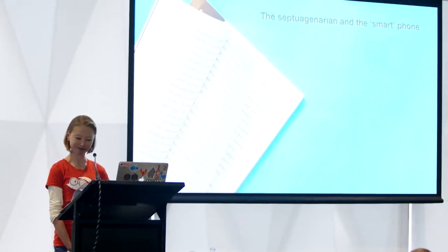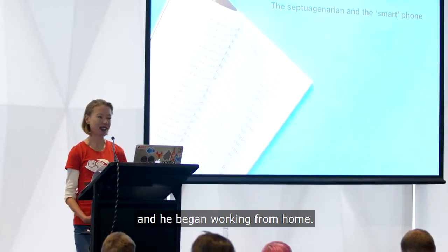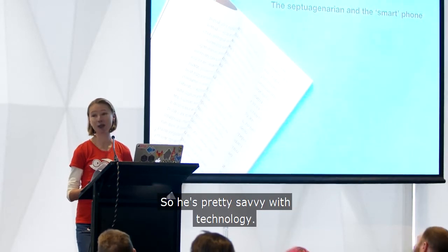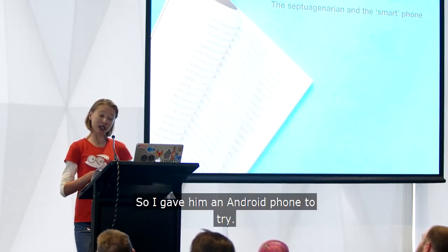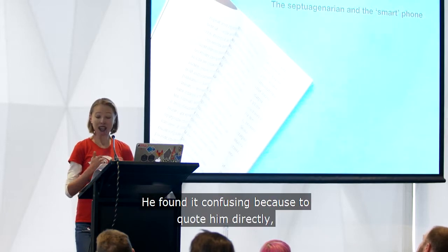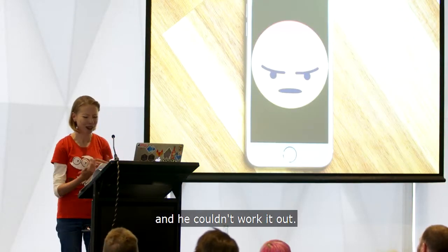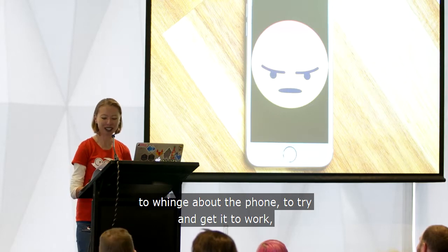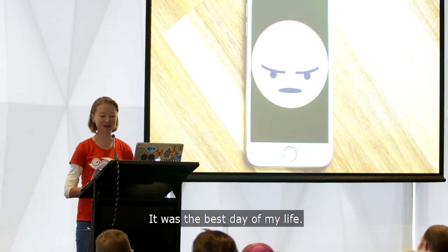The septuagenarian and the smartphone. So my dad, he's in his early 70s, and last year he closed his shop and he began working from home. I thought it was a really good idea to get him a smartphone. He's pretty savvy with technology — he used computers all the time at work, I didn't think it would be an issue. So I gave him an Android phone to try. He found it confusing because, to quote him directly, it was illogical to any human. It didn't work in a way that he was expecting and he couldn't work it out. So he was constantly calling me from his landline to complain about the phone, and we were both extraordinarily happy when the phone died.